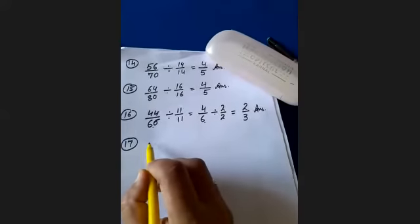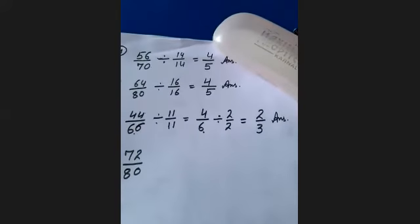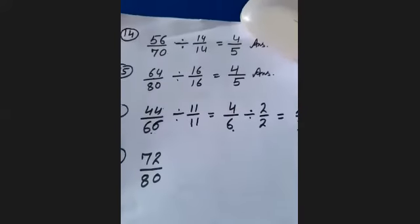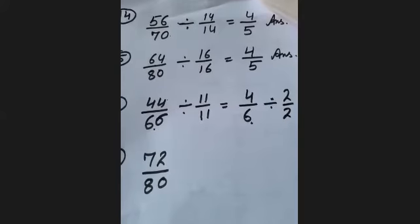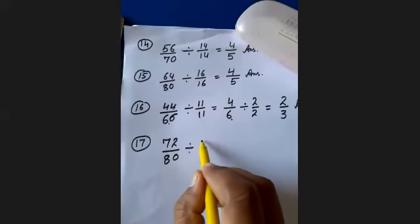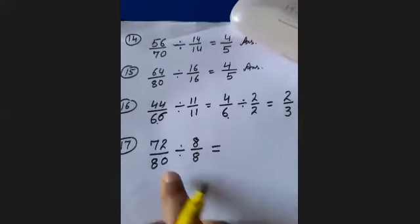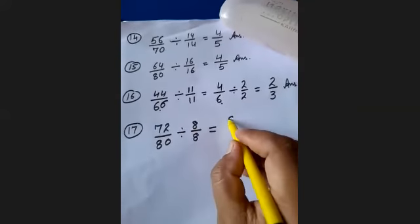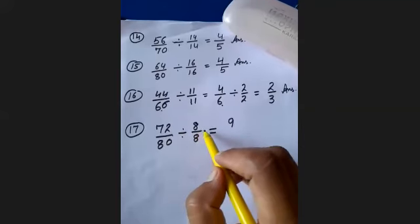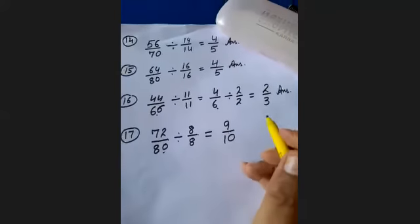Question 17: 72 upon 80. The numerator is 72 and the denominator is 80, and both are multiples of 8. Divide by 8: 72 divided by 8 is 9, and 80 divided by 8 is 10. Your answer is 9 upon 10.